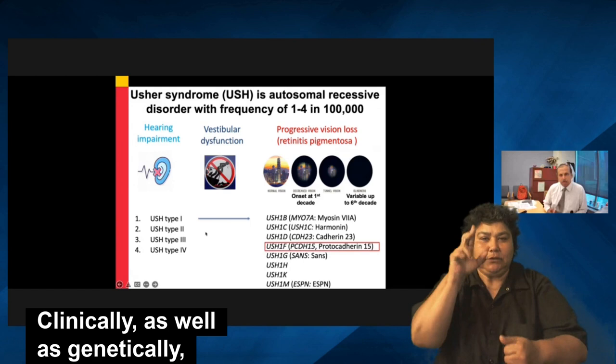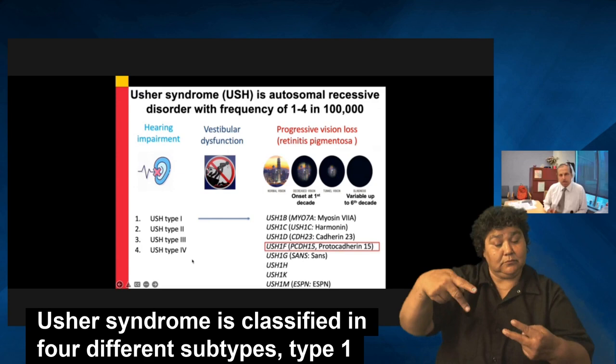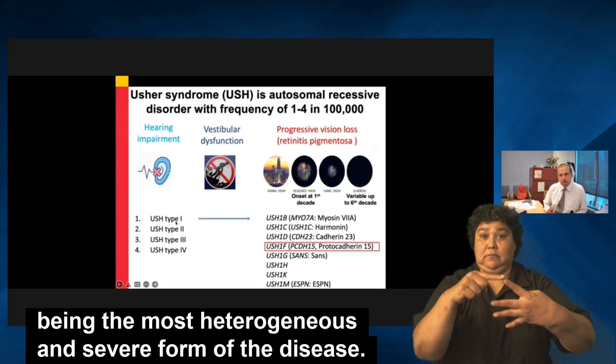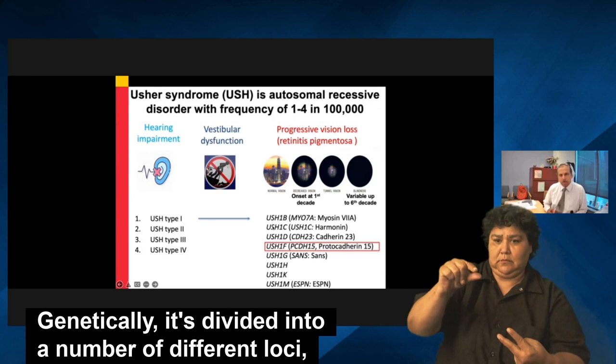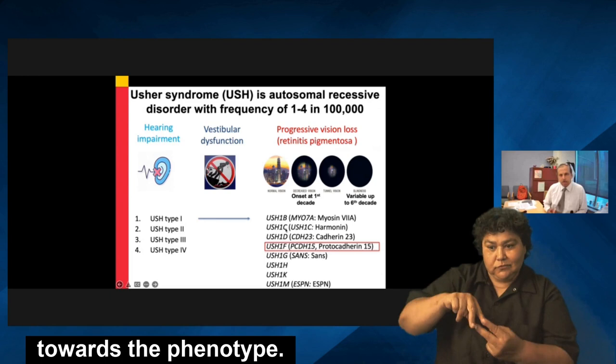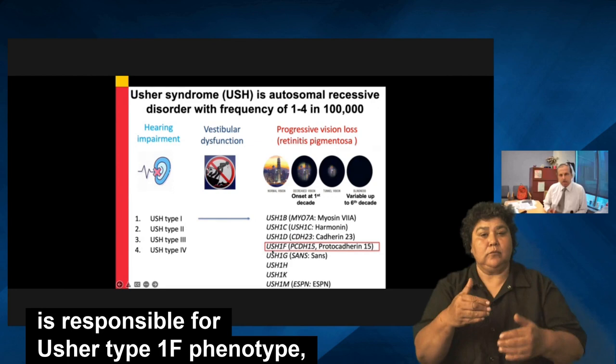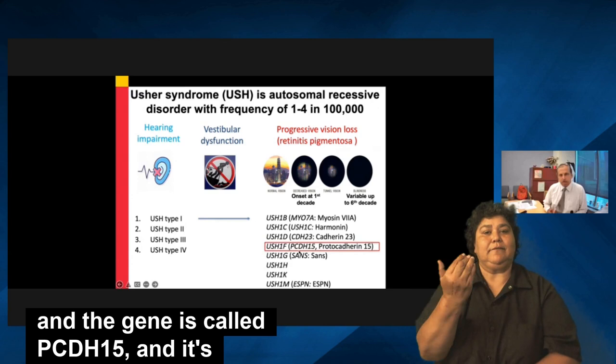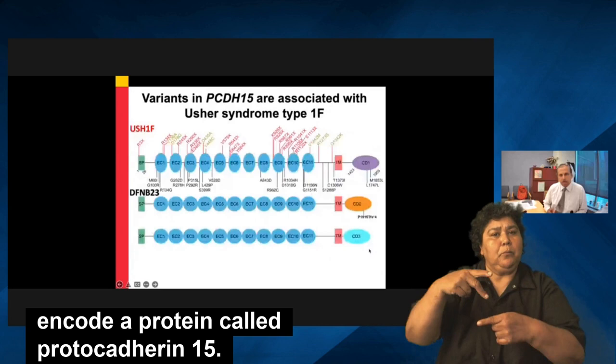Clinically as well as genetically, Usher syndrome is classified into four different subtypes, with type 1 being the most heterogeneous and severe form of the disease. Genetically, it's divided into a number of different loci, and many genes are known that contribute to the phenotype. For today's presentation, I'm going to focus on the gene responsible for Usher type 1F, which is PCDH15.